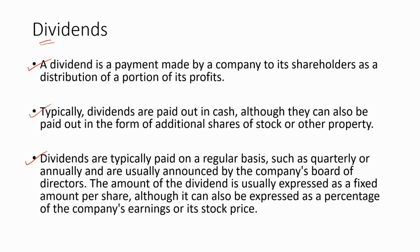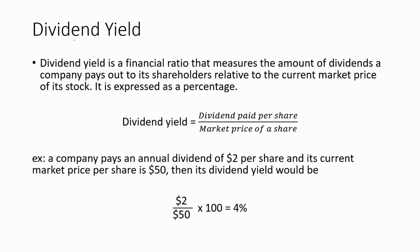Dividends are usually announced by the company's board of directors. The amount of the dividend is usually expressed as a fixed amount per share, although it can also be expressed as a percentage of the company's earnings or its stock price. Simply, dividends are the form of return that shareholders will receive. For ordinary shareholders, the decision to pay dividends is at the board of directors' discretion, whereas preference shareholders will receive a fixed dividend.